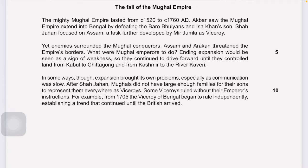Like Question 2, we'll go through the whole paragraph line by line to collect as much information as possible. The mighty Mughal Empire lasted from 1520 to 1760 AD. Akbar extended the Mughal Empire into Bengal by defeating the Barawiyans. Issa Khan's son Shah Jahan focused on Assam, attacks further developed by Mir Jumla as viceroy.